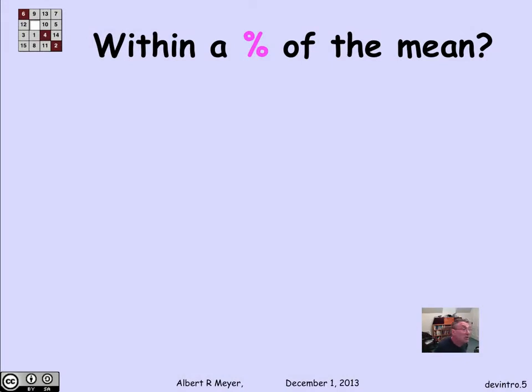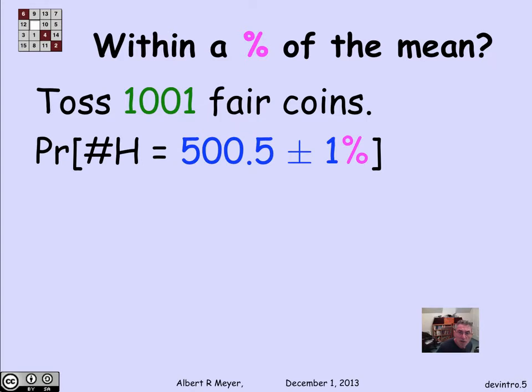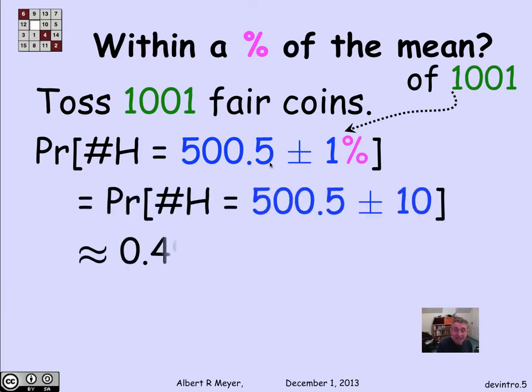But things get better when we start looking at percentages. So what's the probability of being within 1% of the mean if I toss 1,001 coins? Well, 1% of 1,001 is about 10. So we're talking about the probability of being within 510 and 490.